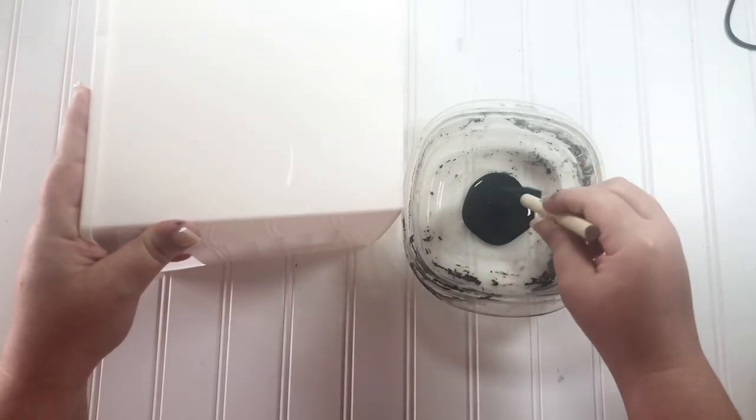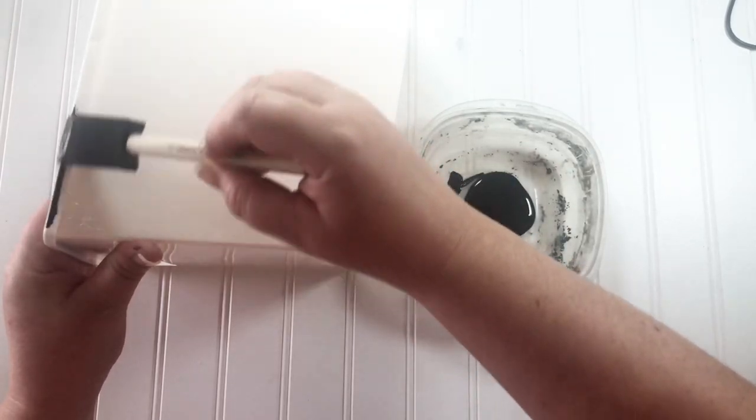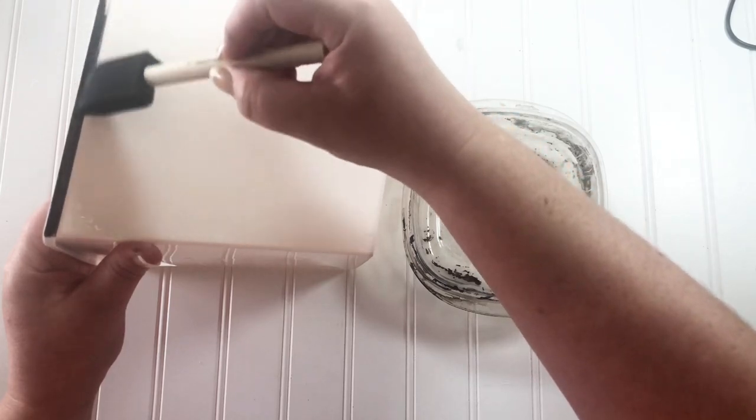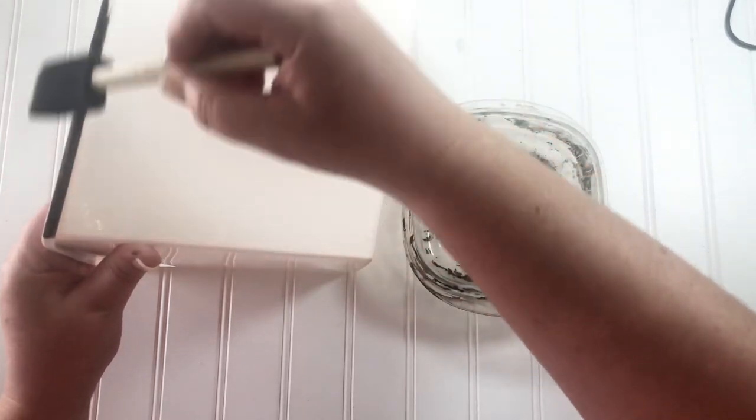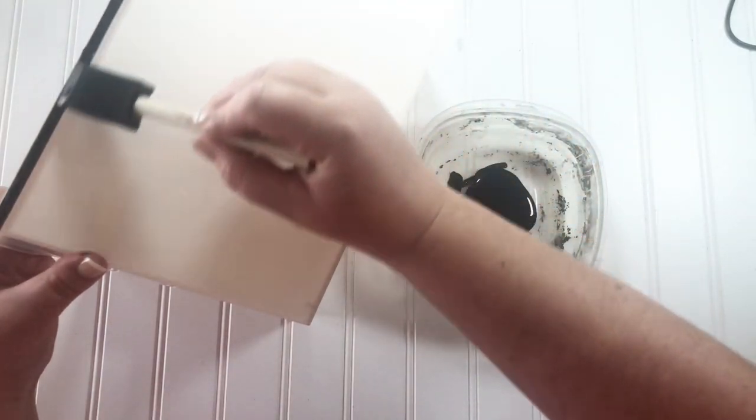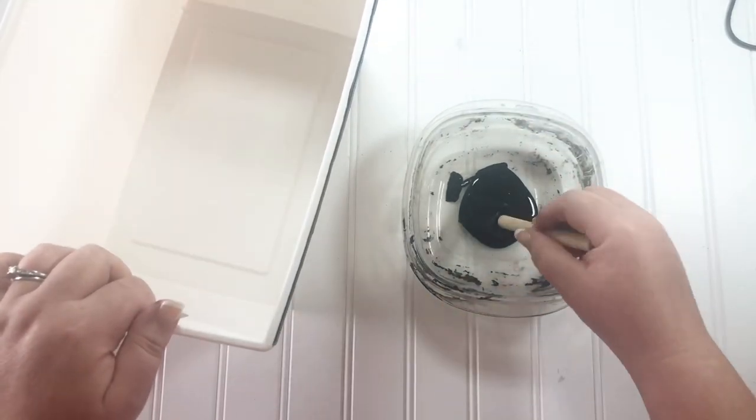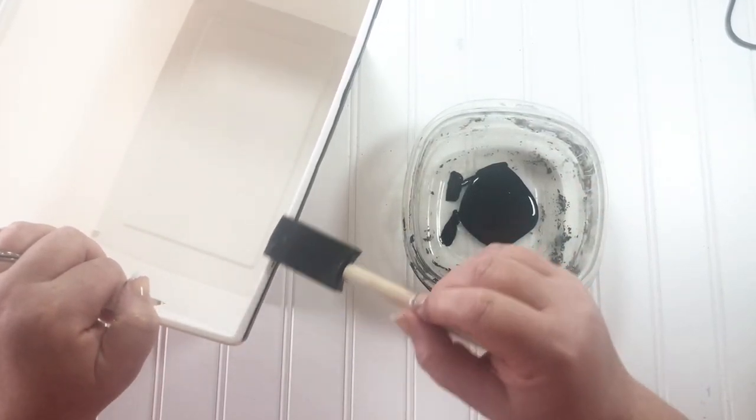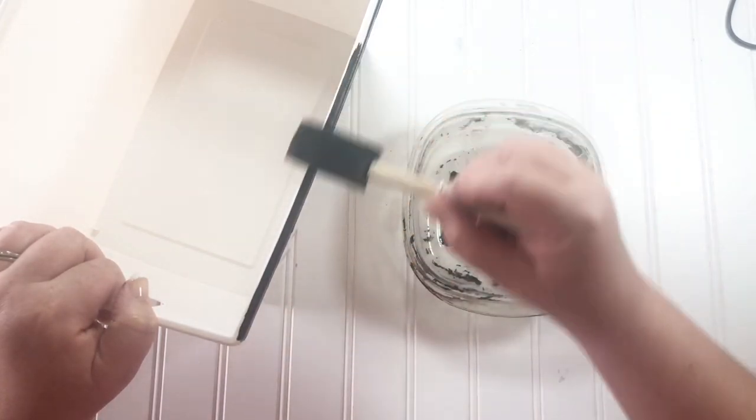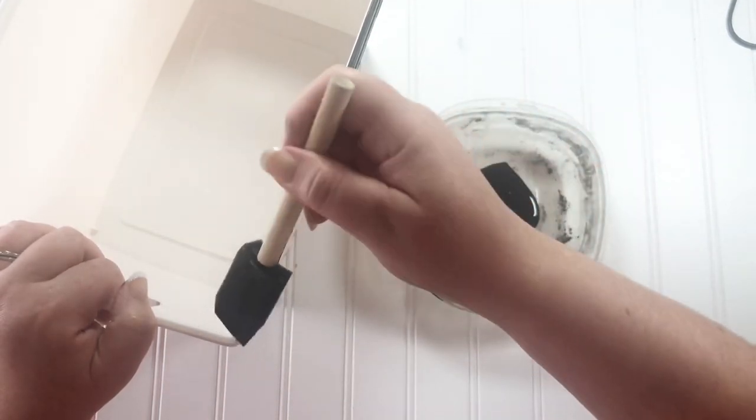Then I'm using Apple Barrel black paint to paint around the edge, just the top edge of this bucket, to make it look like enamelware. This technique is something that you can use to transform almost anything. Anything can look like enamelware. I love doing this with all kinds of containers.